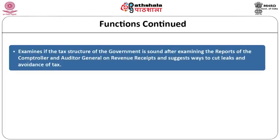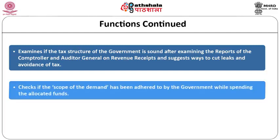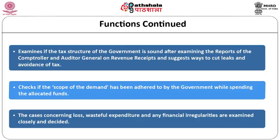The committee also examines whether the tax structure of the government is sound after reviewing the CAG's reports on revenue receipts, and suggests ways to cut leaks and avoidance of tax. It checks whether the scope of demands has been adhered to by the government while spending allocated funds. Cases concerning loss, wasteful expenditure, and any other financial irregularities are examined closely and decided upon.